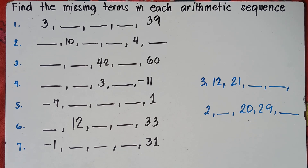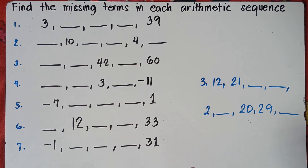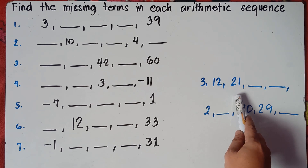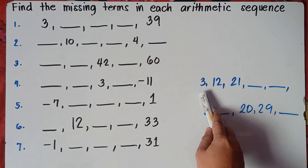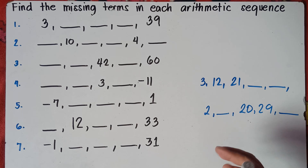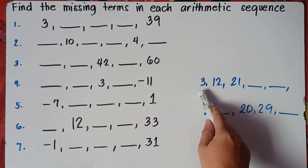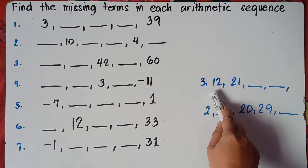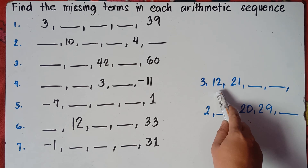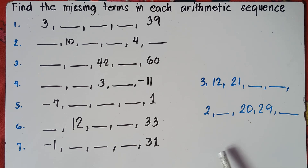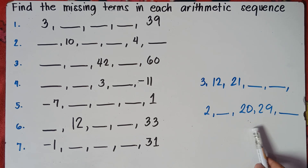This is already Part 2 of our video. In Part 1, we had examples where the consecutive terms are given — for example, 3, 12, and 21. These are the first, second, and third terms. It's easy to find the common difference by subtracting the second term minus the first term: 12 minus 3 is 9. Third term minus second term: 21 minus 12 is also 9. So the common difference is 9. If we have two consecutive terms, it's easy to get the common difference.